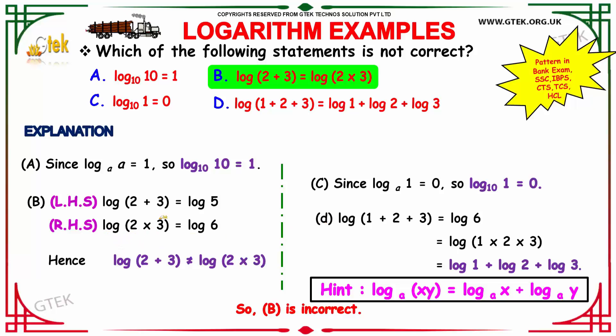Moving on to our third option. We already know that log 1 to the base A equals 0, so log 1 to the base 10 will be 0. Hence, option C is also a valid one.